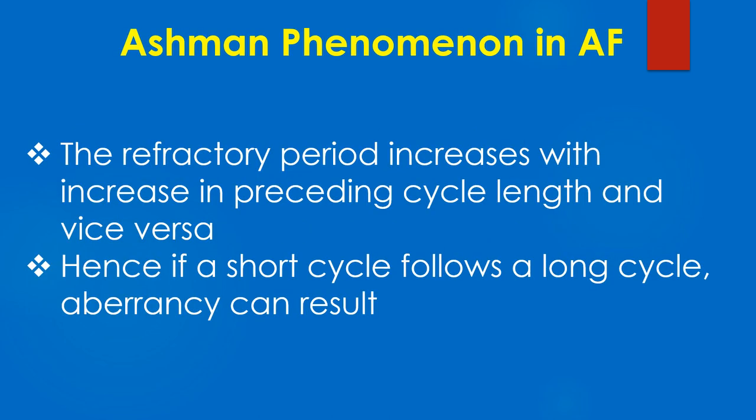The refractory period increases with increase in preceding cycle length and vice versa. Hence, if a short cycle follows a long cycle, aberrancy can result.